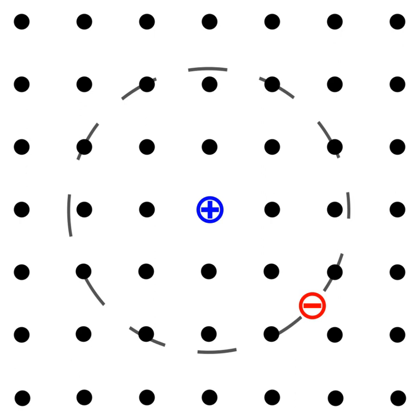An intermediate case between Frenkel and Wannier excitons, charge transfer excitons occur when the electron and the hole occupy adjacent molecules. They occur primarily in ionic crystals. Unlike Frenkel and Wannier excitons they display a static electric dipole moment.